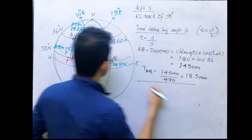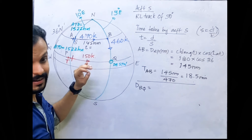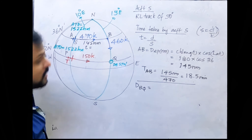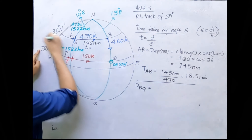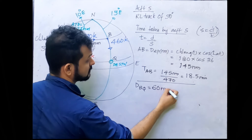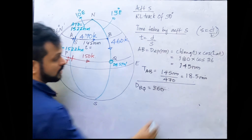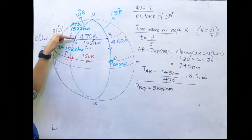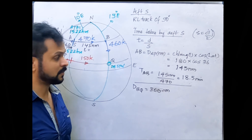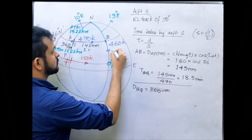Now what about distance B to Q? That distance is not a departure because we are traveling along a great circle track — a meridian. The aircraft is at 36° North and traveling south, making a change in latitude of 6° to reach 30° North. That's 6 degrees, which is 360 minutes of arc. Since it's along a meridian (a great circle), 1 minute equals 1 nautical mile, so the distance B to Q is 360 nautical miles.